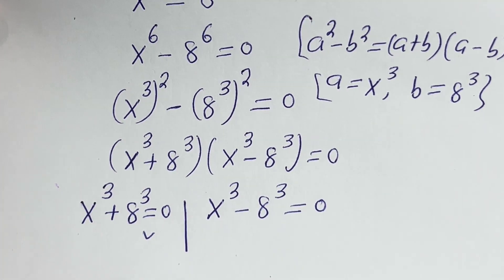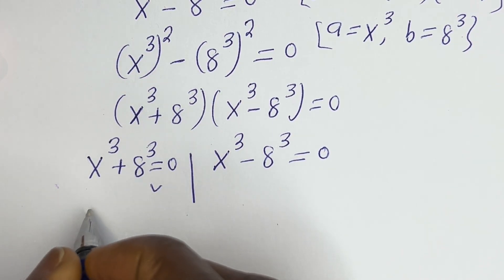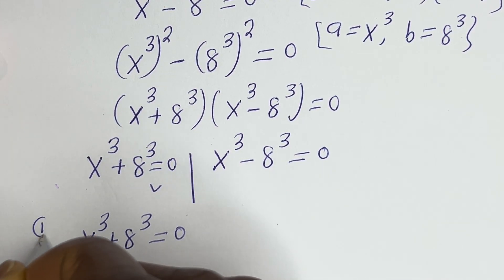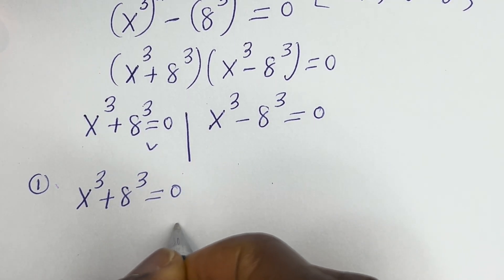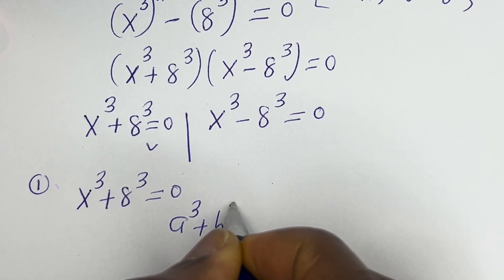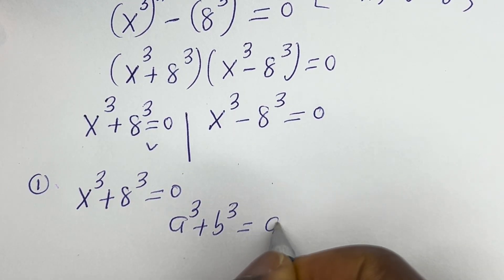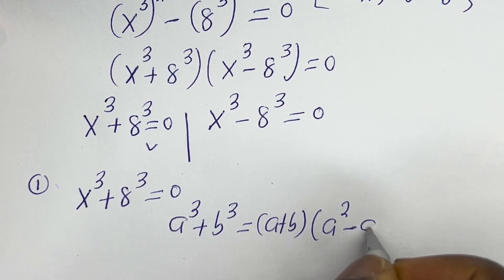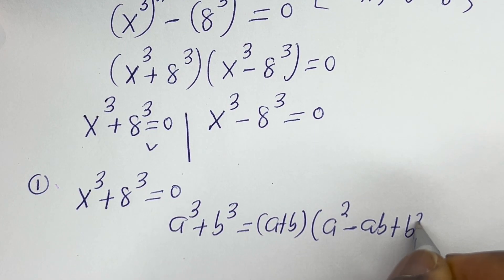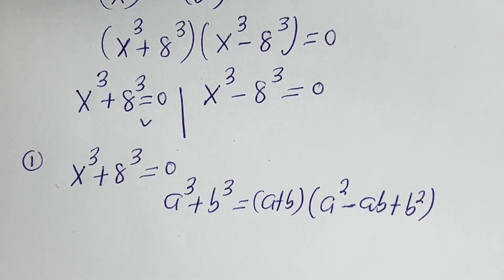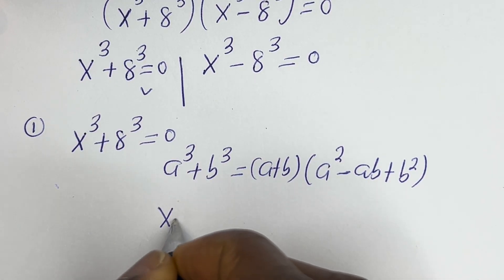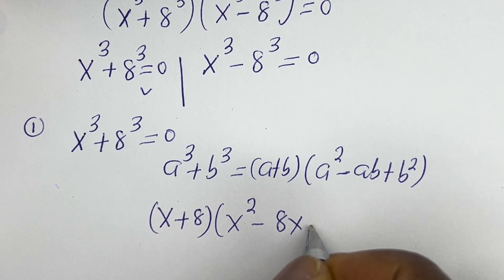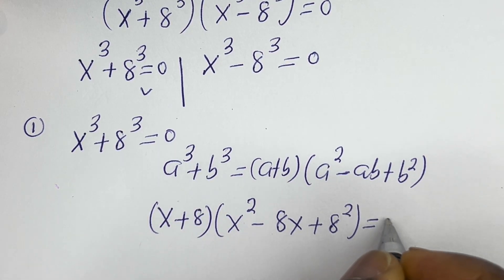Now let's consider the first case: s to the power of 3 plus 8 to the power of 3 is equal to 0. Take note that if you have a to the power of 3 plus b to the power of 3, this equals (a plus b)(a squared minus ab plus b squared). So here we have (s plus 8)(s squared minus 8s plus 64) is equal to 0.